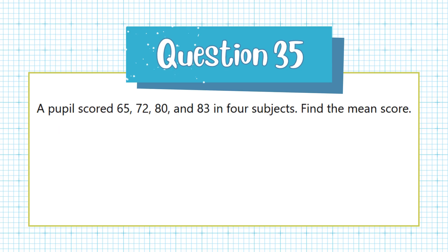Question 35. A pupil scored 65, 72, 80, and 83 in 4 subjects. Find the mean score.